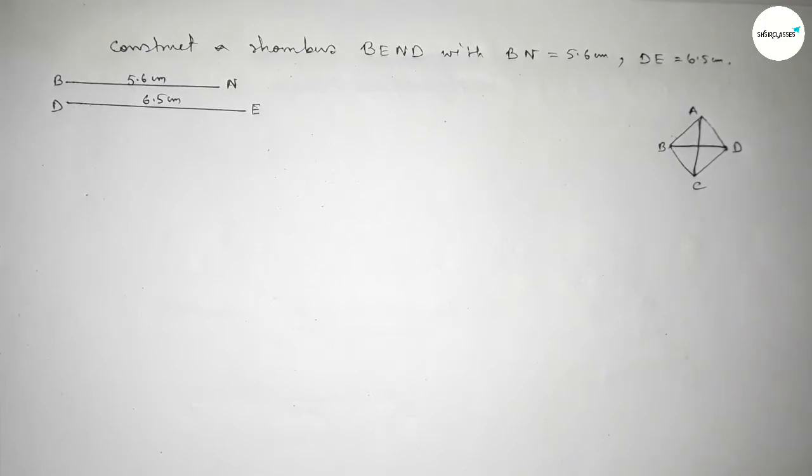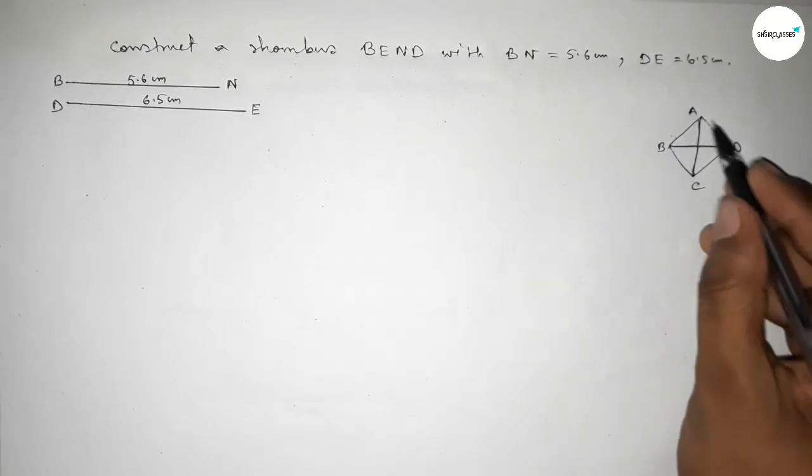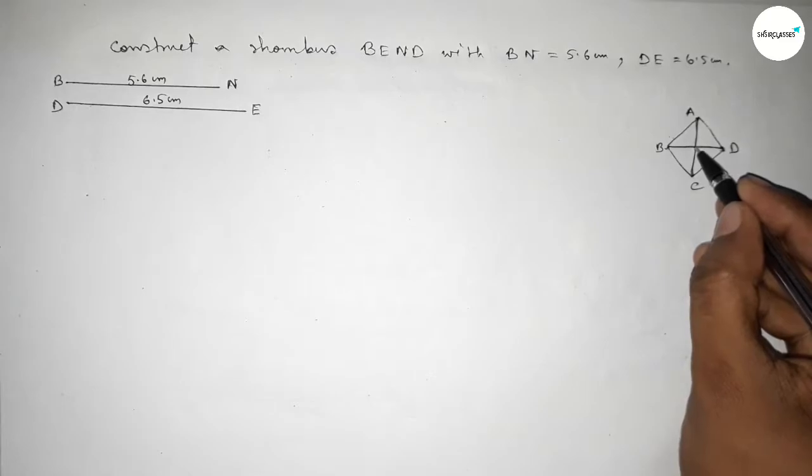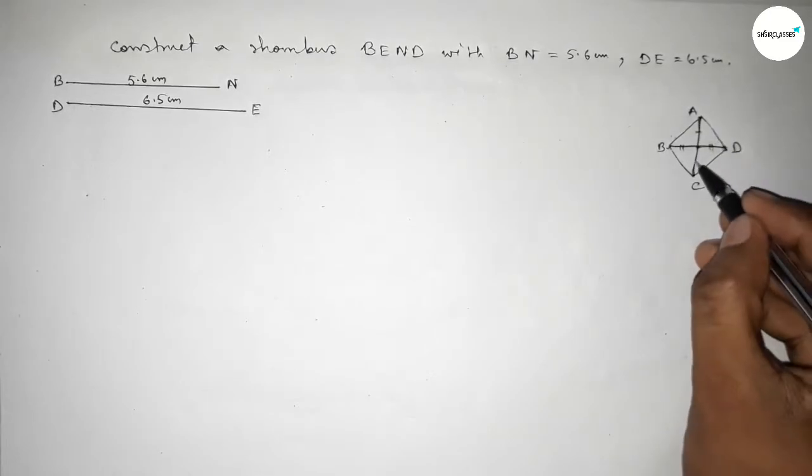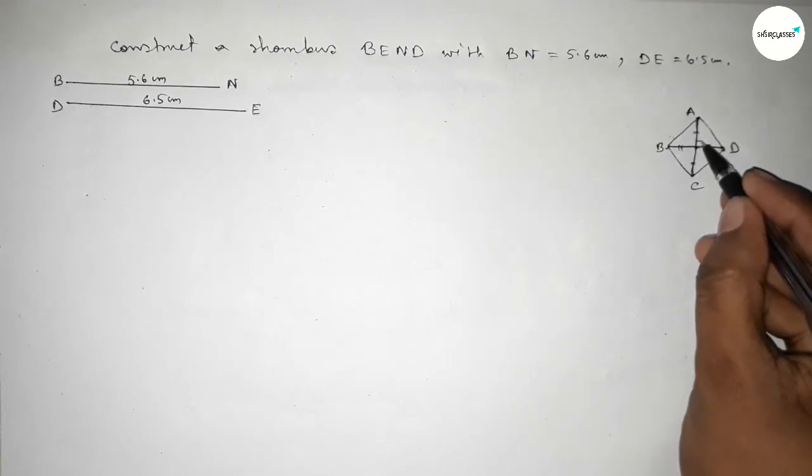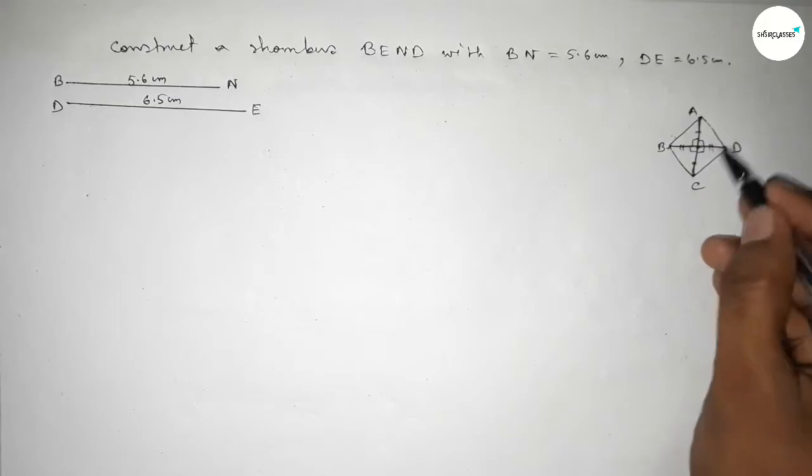Both diagonals intersect at a point and bisect each other equally. So this side and this side are equal, and this side and this side are also equal. Here they create 90-degree angles.